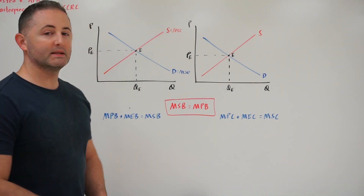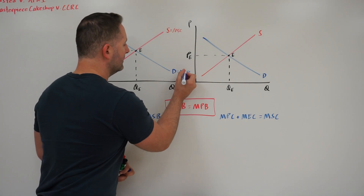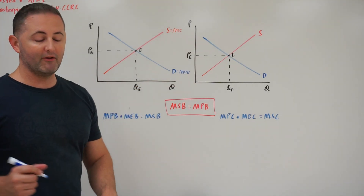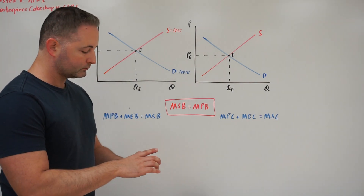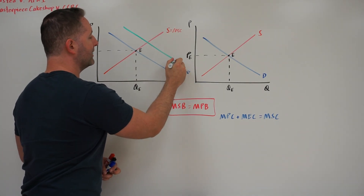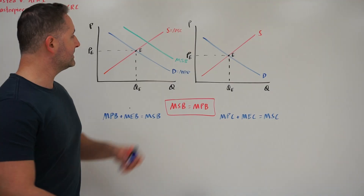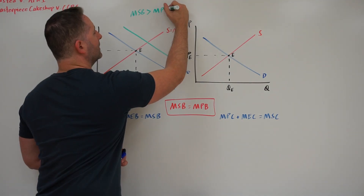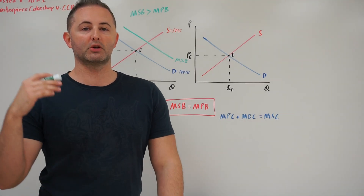However, this isn't always the case. Sometimes this demand curve, instead of representing the marginal social benefit, is really only representing the marginal private benefit. That means there must be some external benefit if marginal private benefit and social benefit aren't the same thing. So what would happen is we would have a new curve — another demand curve — representing the marginal social benefit. What this is telling us is that the marginal social benefit is greater than the marginal private benefit, so there must be some kind of external benefit accruing to other people.